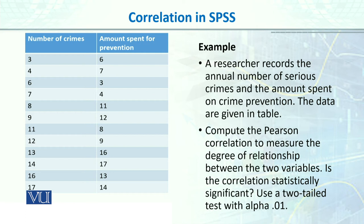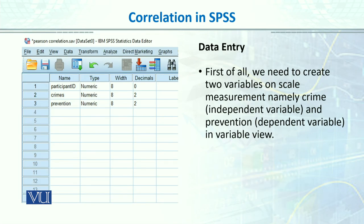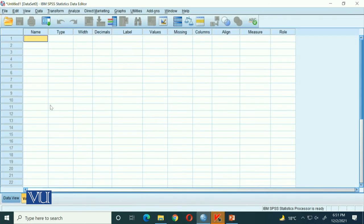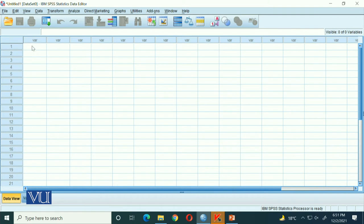We have been given an alpha level of 0.01. Let's go to SPSS and enter the data. Here is the SPSS data sheet — you are pretty much familiar with it now. We will enter the data from this example.